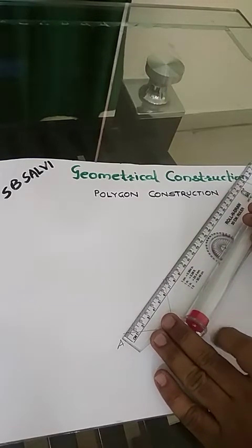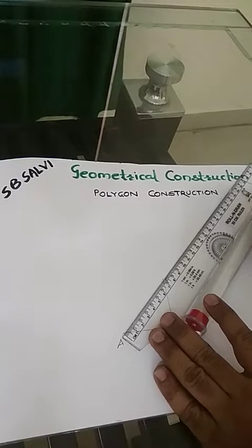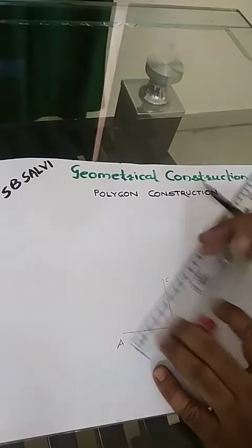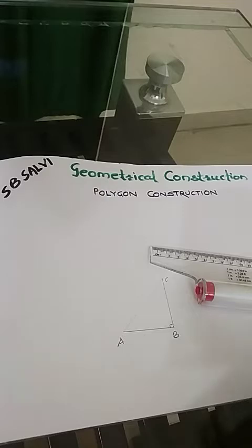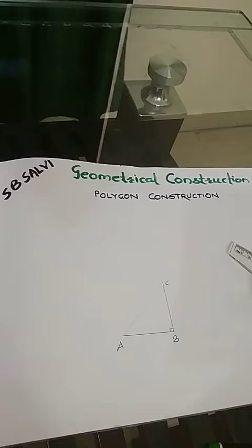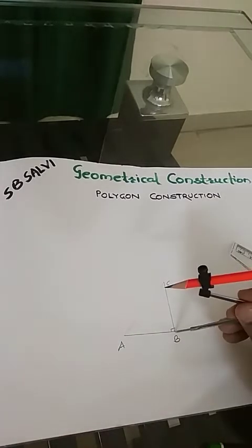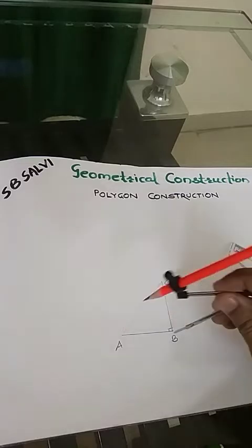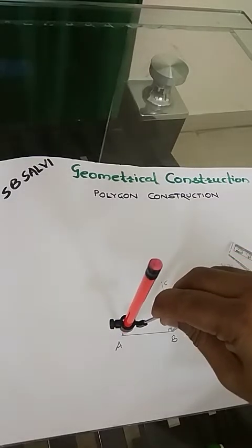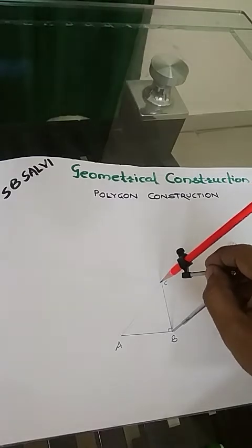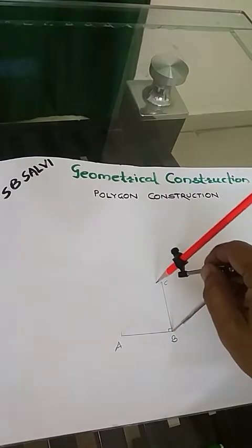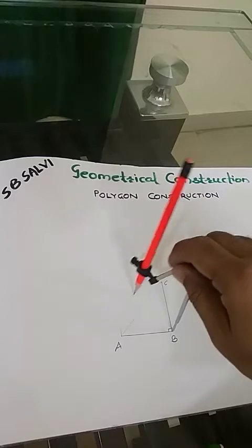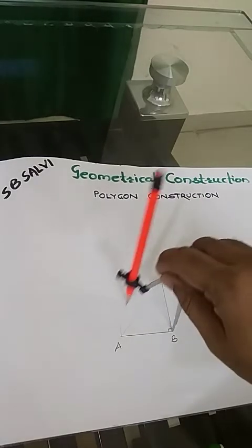Now join A and C by a faint line. Then use compass, keep compass on B, take BA as radius, and draw a faint arc.